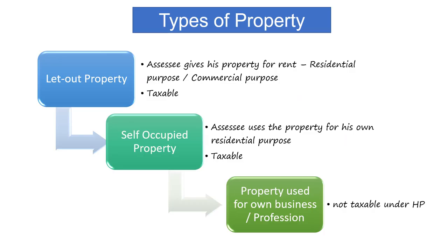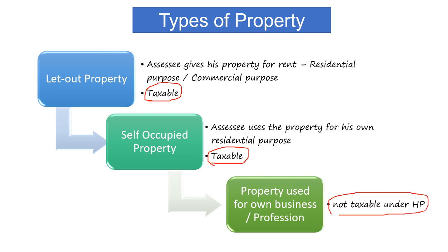A let out property is when the owner gives the property for rent — it is taxable under income from house property. If the property is used by the owner for his own residential purpose, it is called a self-occupied property, also taxable under house property. If the property is used by the owner for business or profession, that house will not be considered under house property at all — we will not calculate income from house property for it.